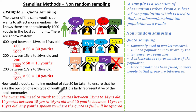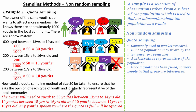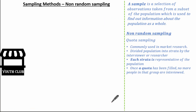To answer the question, the owner will need to speak to 30 youths aged between 13 to 14, 10 youths aged between 15 to 16, and 10 youths aged between 17 to 18. It's important to state that any youth spoken to where the quota is full will be ignored. Now let's have a look at our next non-random sampling method.